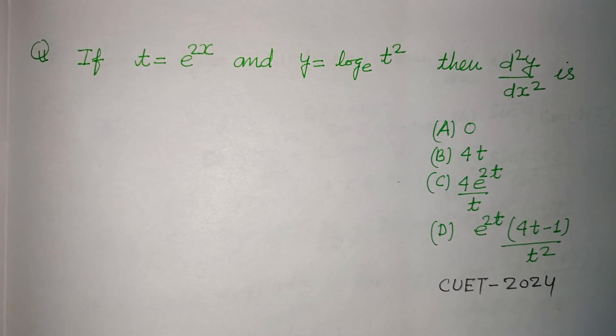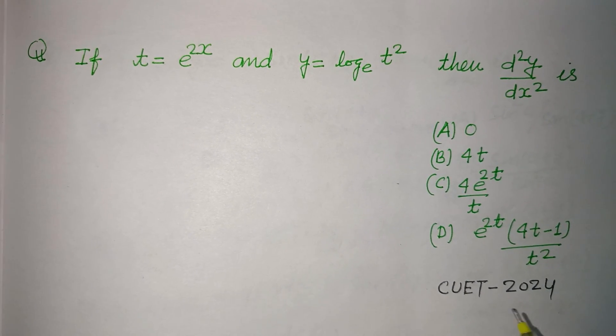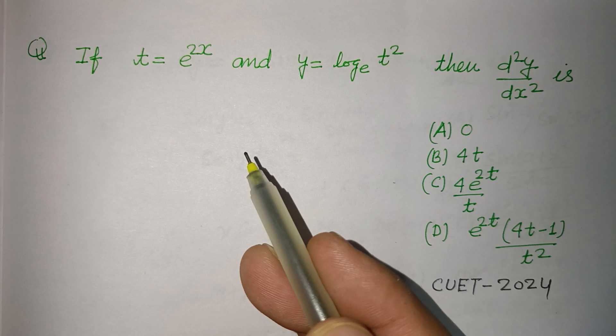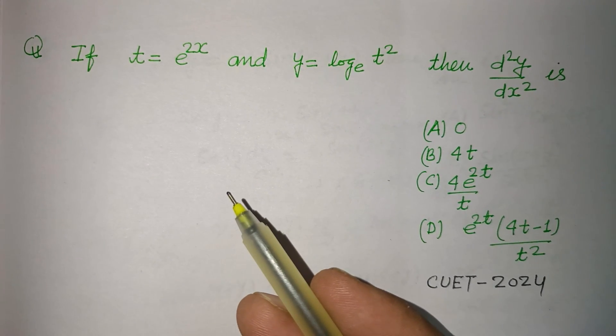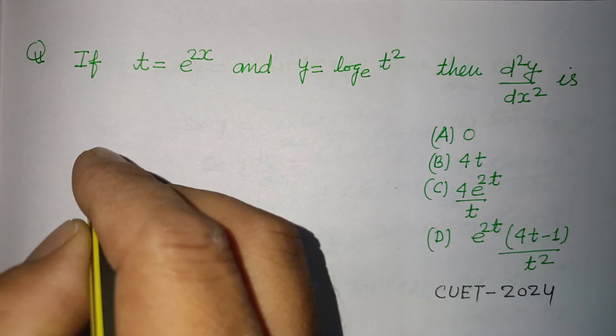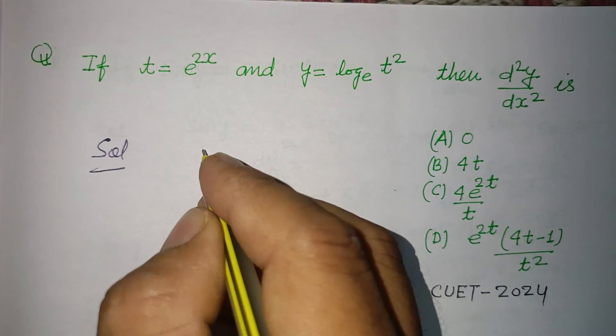Welcome to this YouTube channel. Question from CUET 2024: If t equals e to the power 2x and y equals log base e of t squared, then d squared y over dx squared is... So students, here t is given